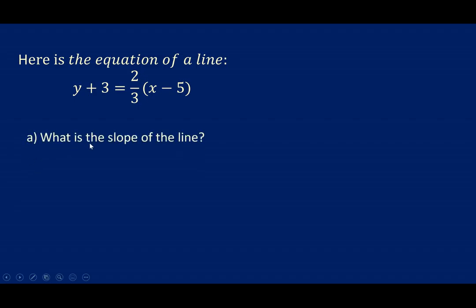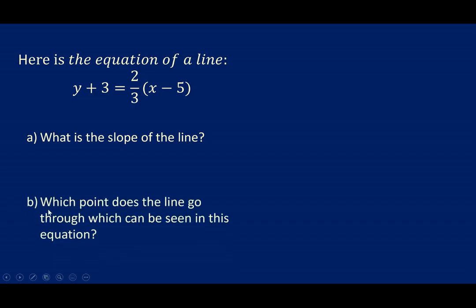First of all, what is the slope of the line? Second of all, which point does the line go through which can be seen in this equation? In other words, can you just look at the given equation and identify an ordered pair that the line would intersect without doing any kind of calculations?